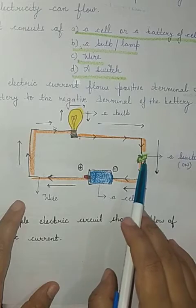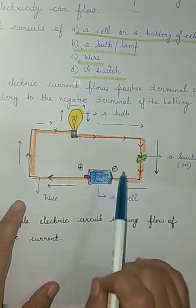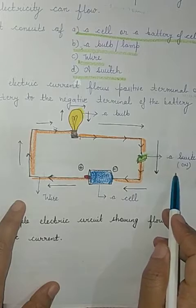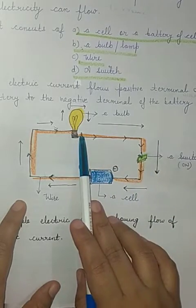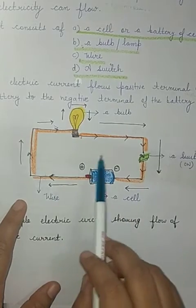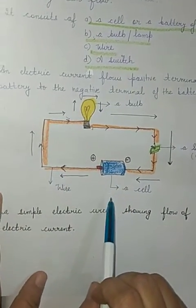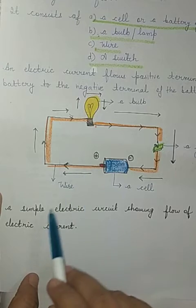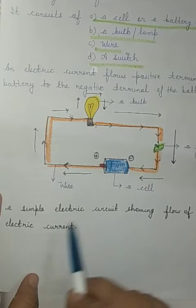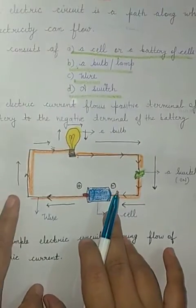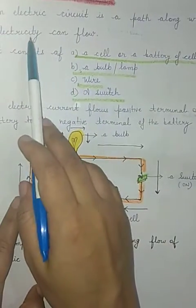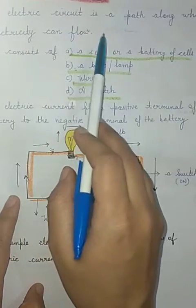In the diagram, this is the switch, this is the cell, and this is the bulb. When the switch is in the on position, the bulb will glow because this is a complete circuit and electric current is flowing through it. So an electric circuit is simply a path along which electricity can flow.